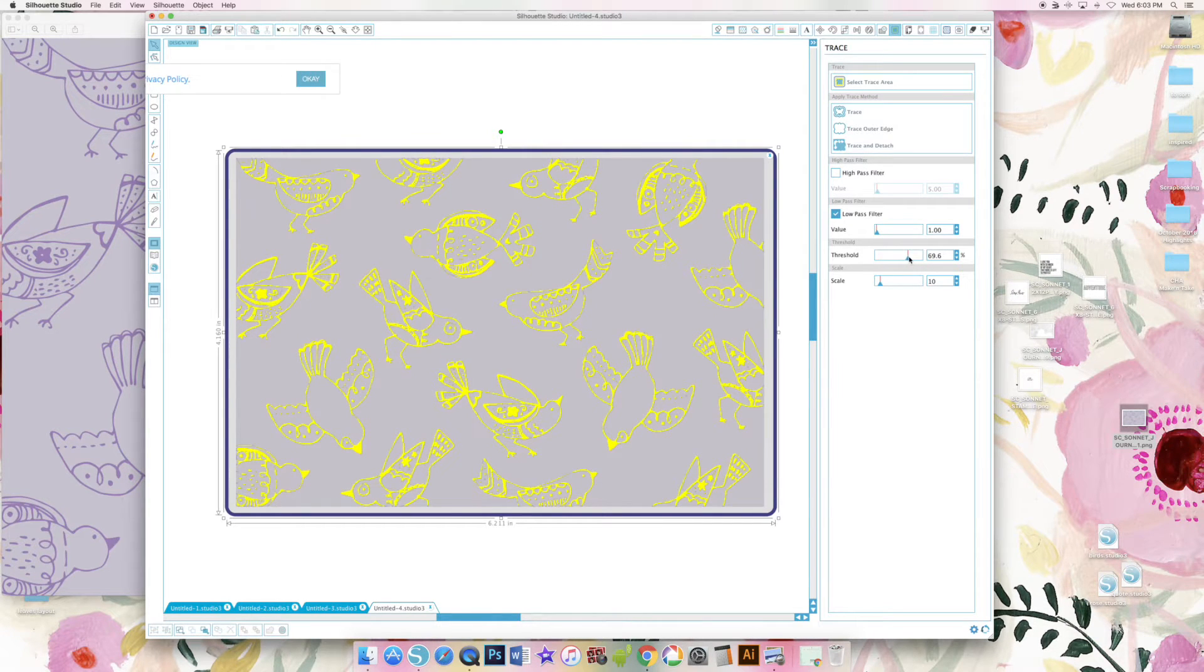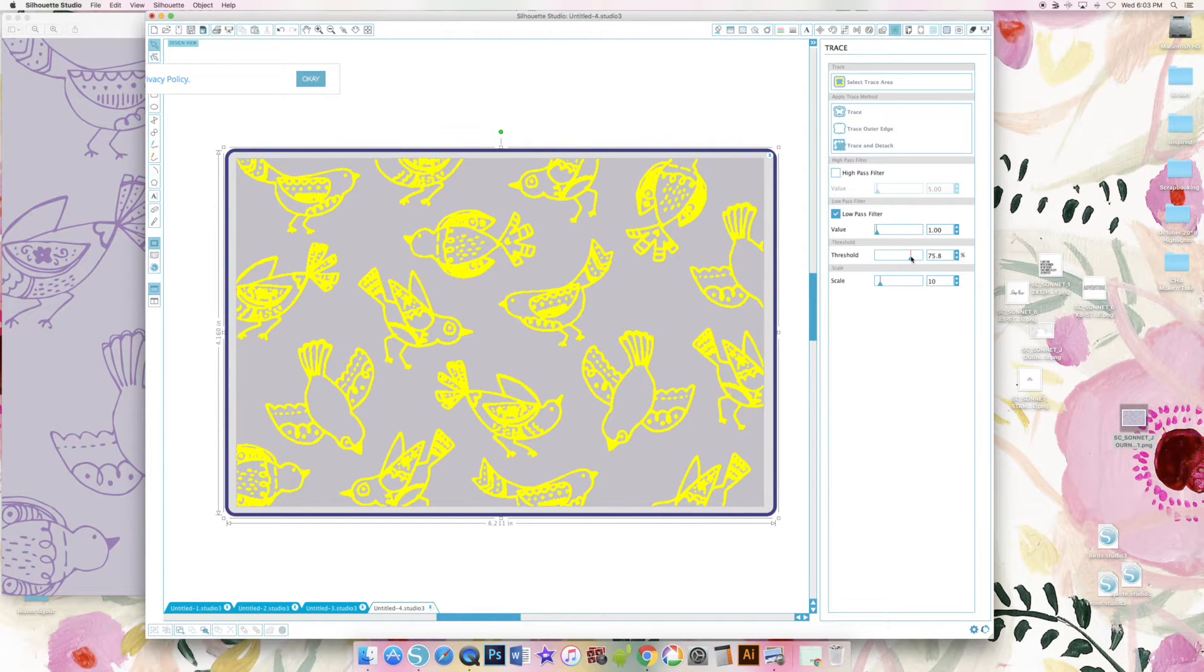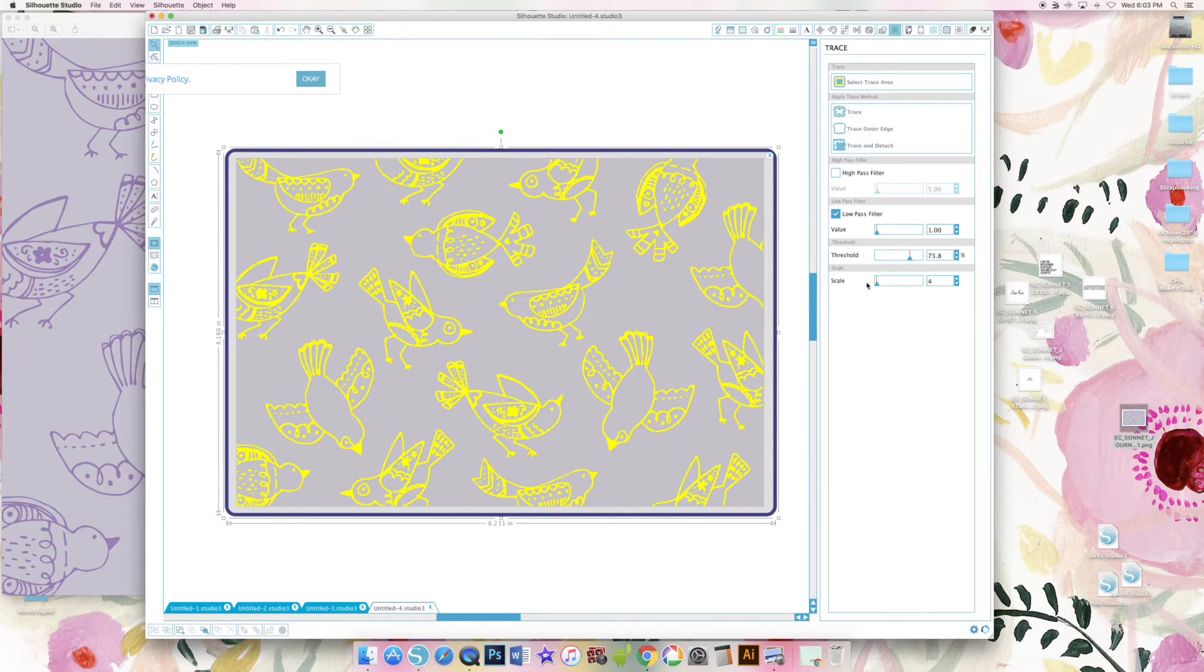Uncheck high pass filter, click on low pass filter, and then just play with the threshold, scale, and value. I'll be honest, I don't really know what they mean. I just know that they cover or take away the yellow area. So just play with them.